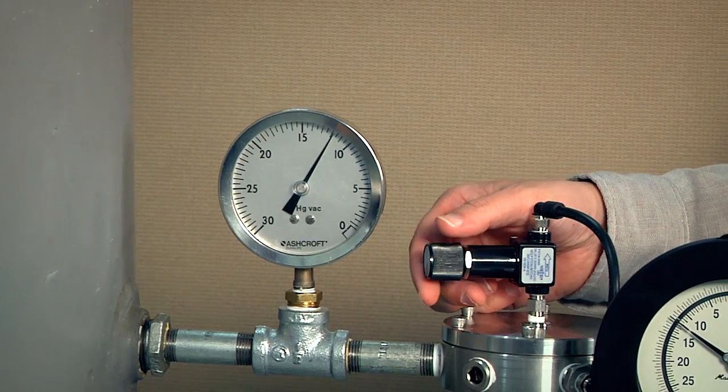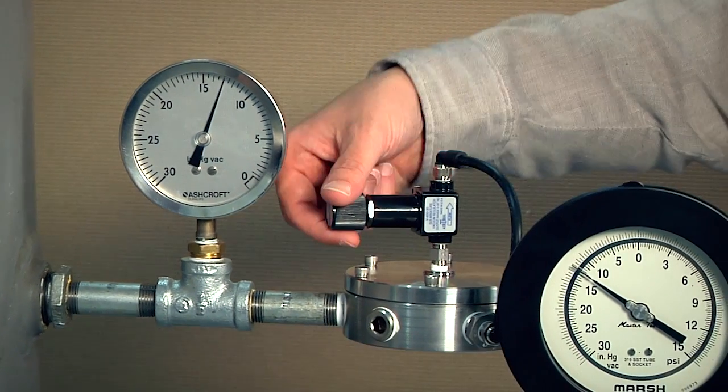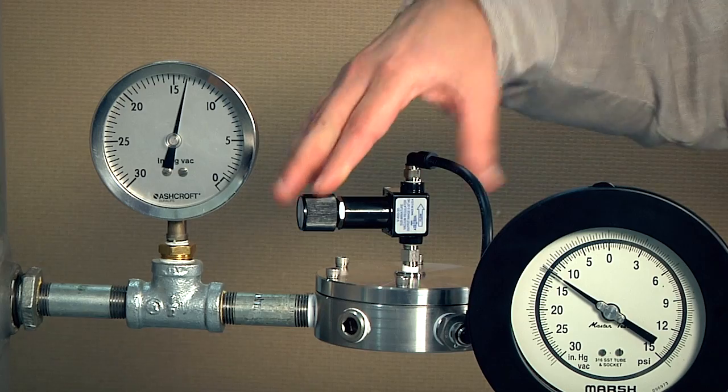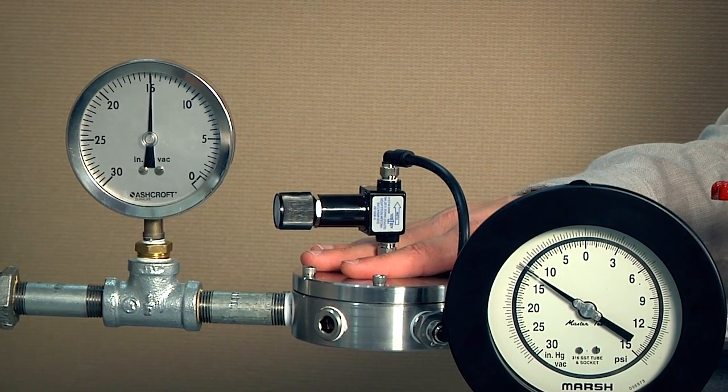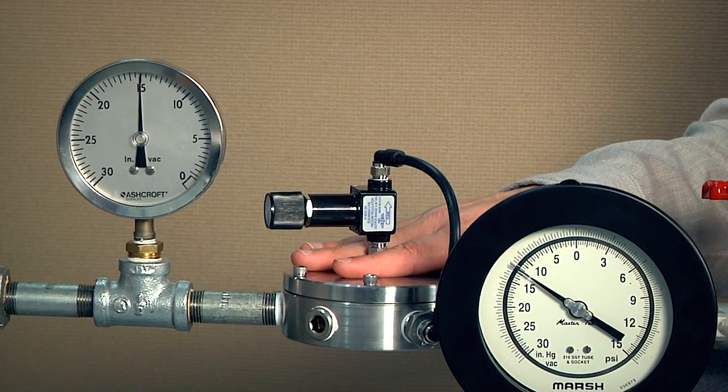I'm going to be able to set the vacuum pressure in the system by turning this hand knob. This hand knob adjusts the pilot to the Equilibar high flow vacuum regulator and determines the vacuum set point.